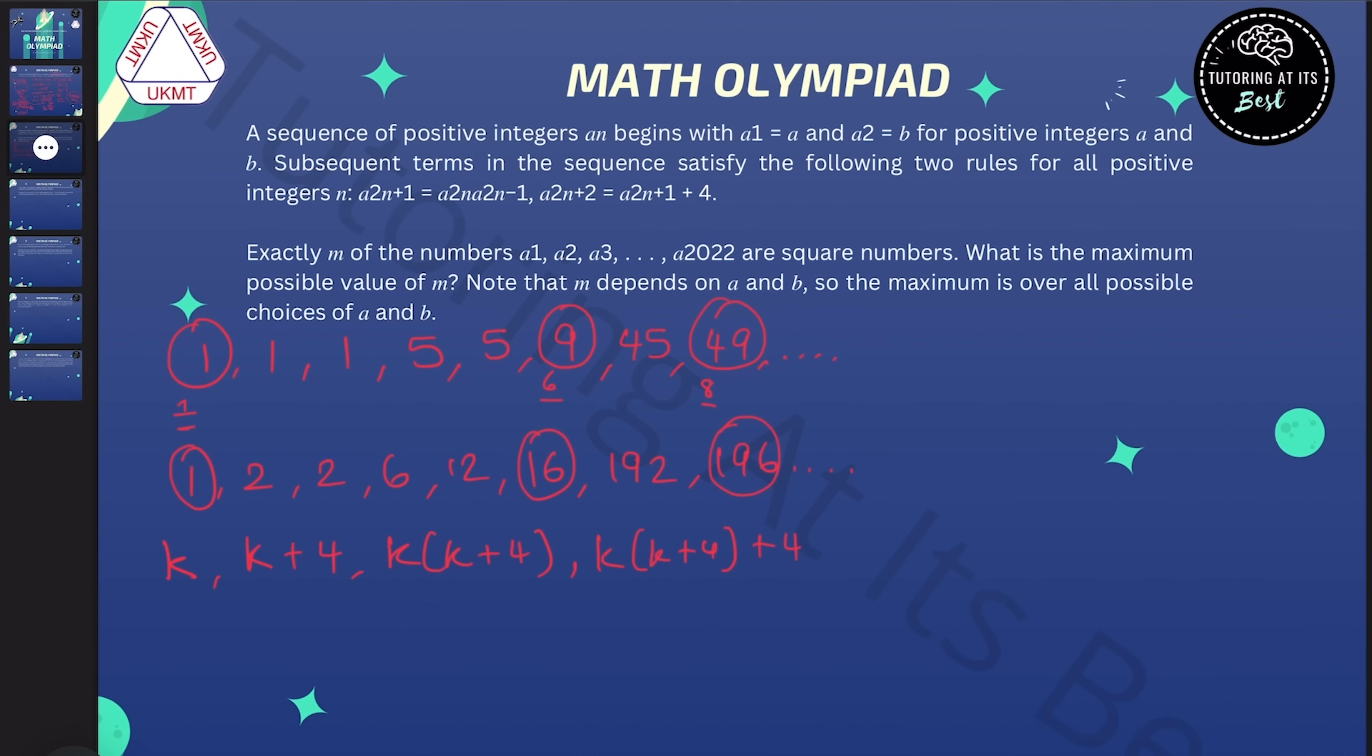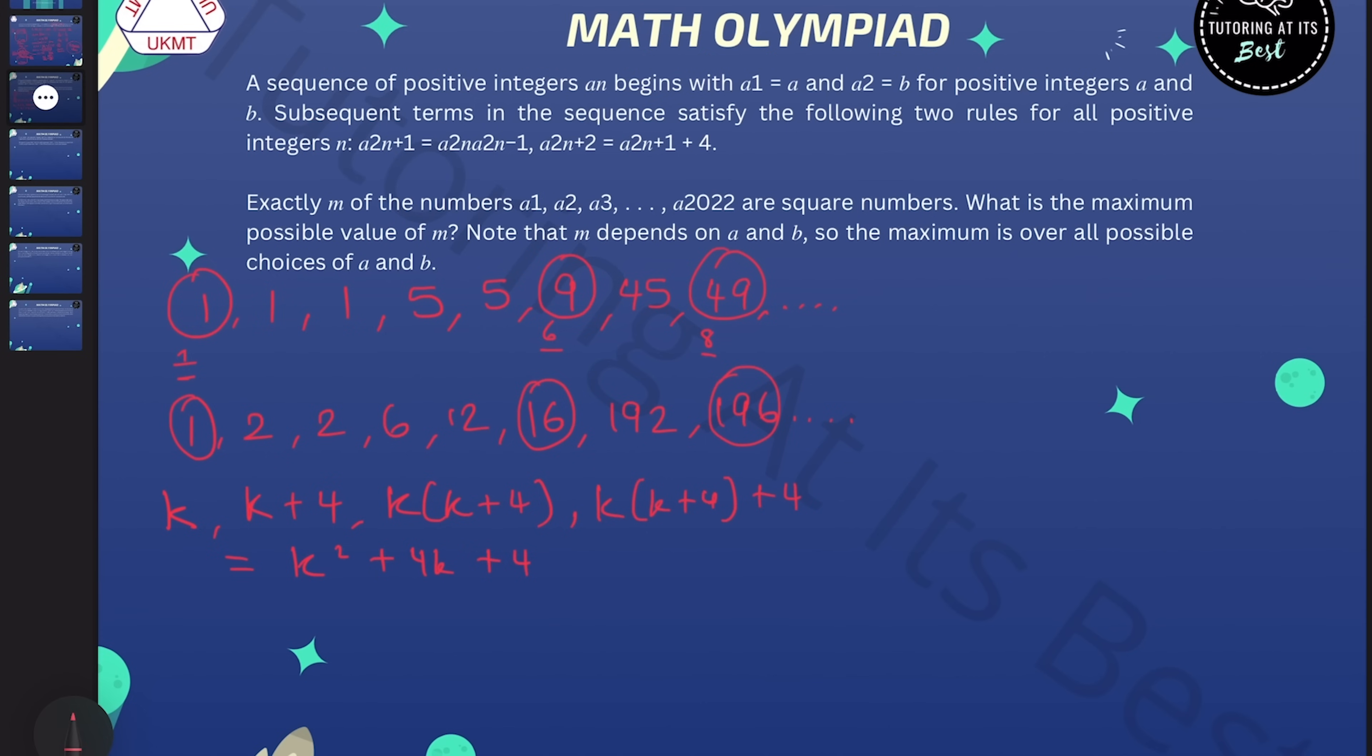Now this has become a bit complicated, but we can simplify this. That equals k squared plus 4k plus 4. And happily, that can also be factorized as k plus 2 squared.